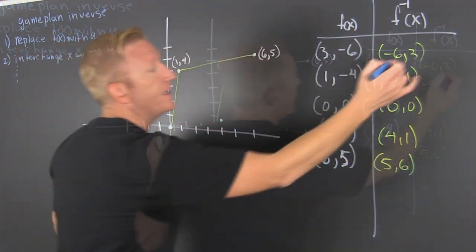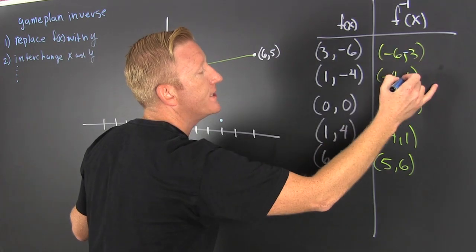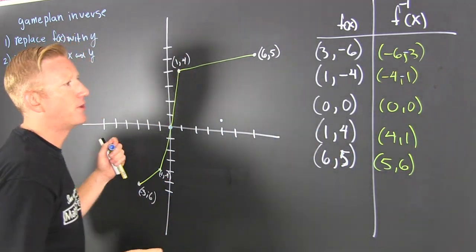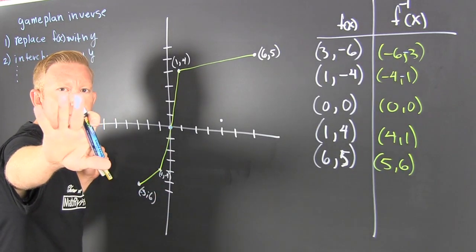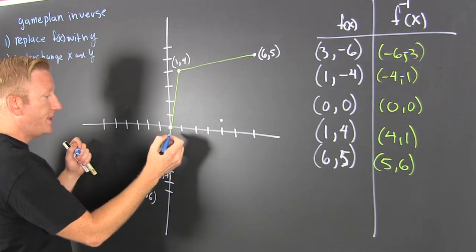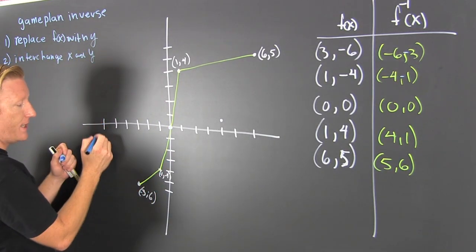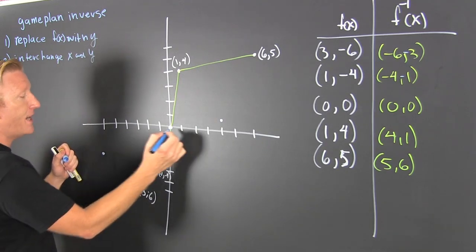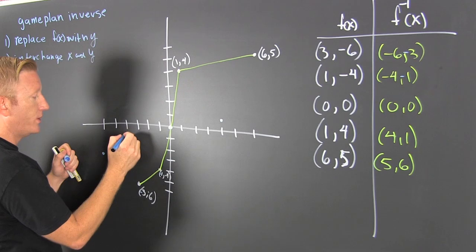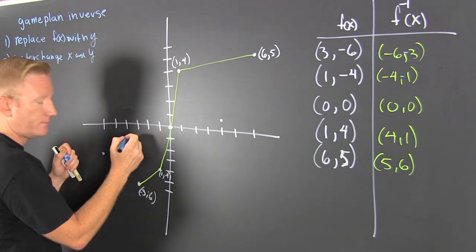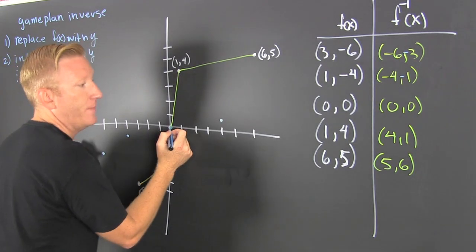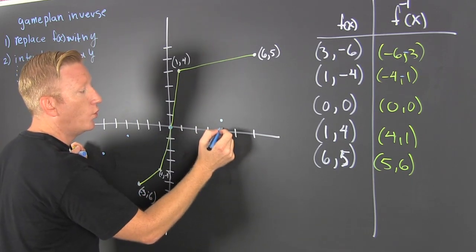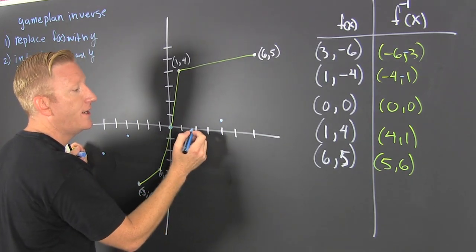So I interchange - that's a (-6, -3) and a (-4, -1). I thought something was wrong. You caught me blue-handed! So then that's a (-6, -3) right there and a (-4, -1) right there. (0, 0) - can't mess that up. And then (4, 1), it's already there. And then (5, 6) - six right about there.